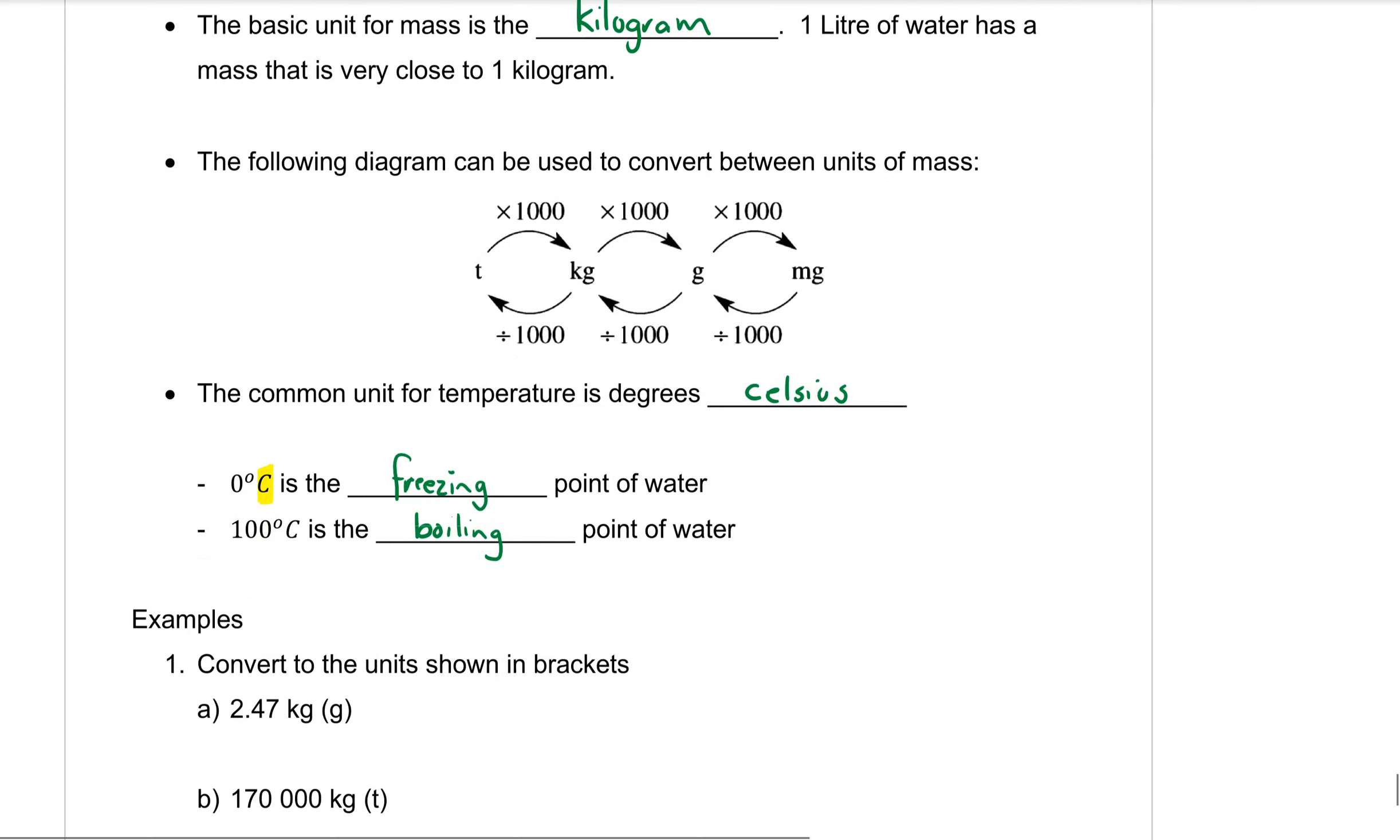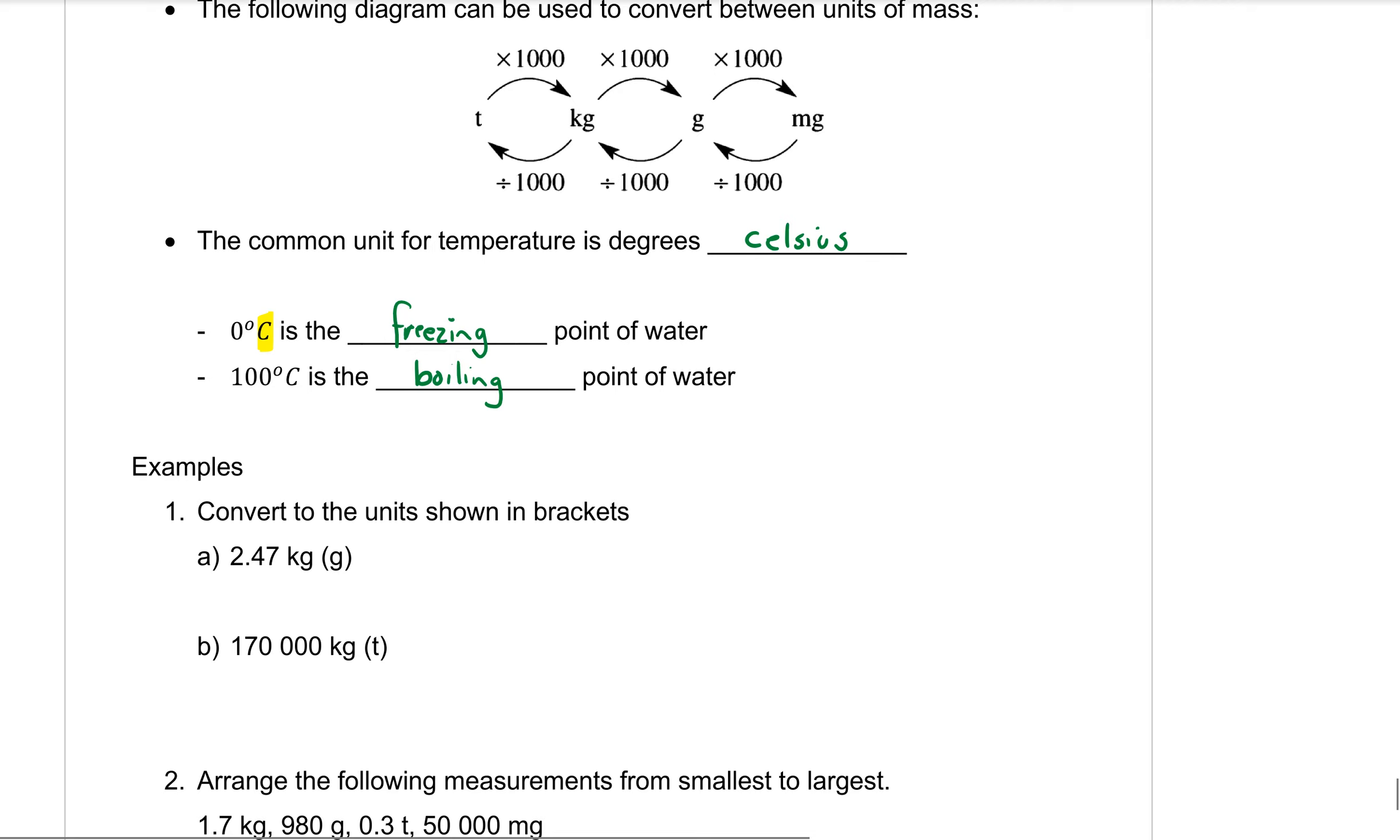We're going to start out with a few conversions. Example number one, convert to the units shown in the brackets. We want to convert 2.47 kilograms to grams. So we're starting with a kilogram, we want to get to grams, so follow the arrow which means I need to times by 1000.